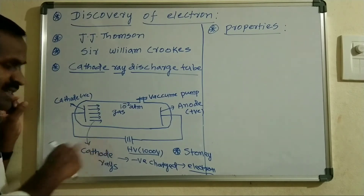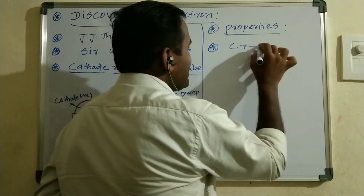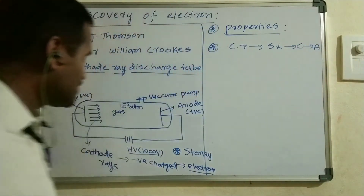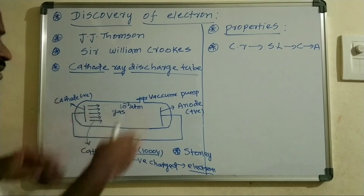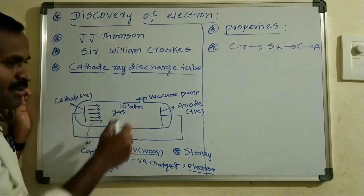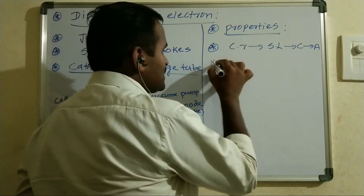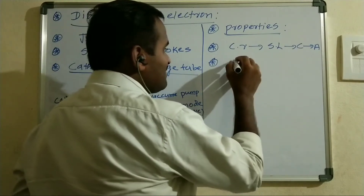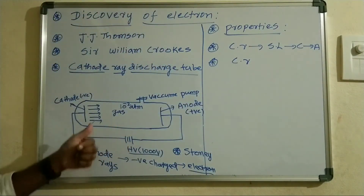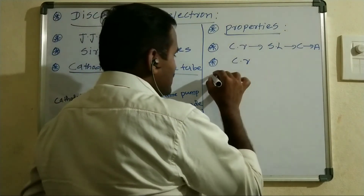So this is how cathode rays are produced. Now, the properties of cathode rays: cathode rays travel in a straight line direction from cathode to anode. If you place any sharp object in the direction of the rays, a sharp shadow is found, from which we can conclude that cathode rays are invisible to the naked eye.